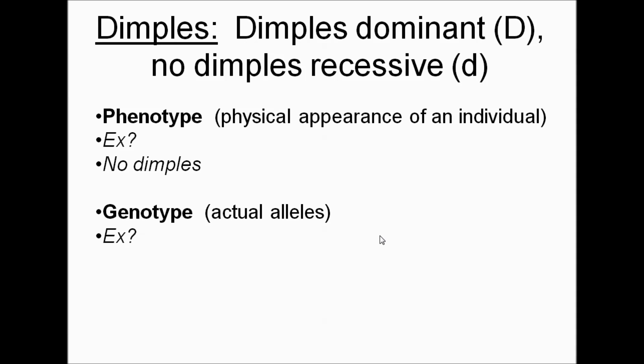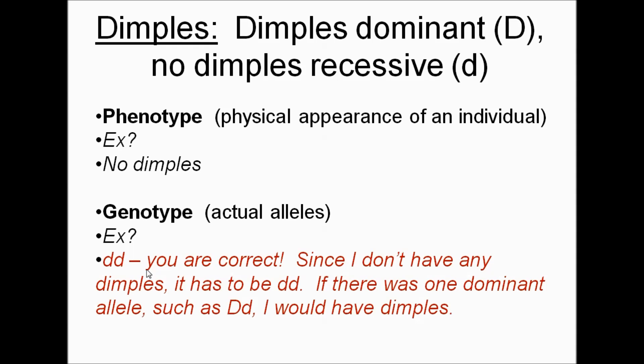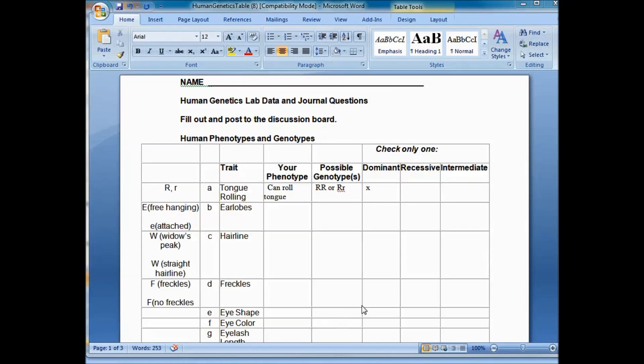Dimples, let's do another one. To have dimples is dominant. No dimples is recessive. So let's say you don't have dimples. What must be your genotype? No dimples, recessive? Yeah, it has to be two little d's. I don't have any dimples at all. My dad and my sister have them like crazy, but I must be two little d's.